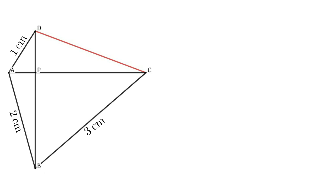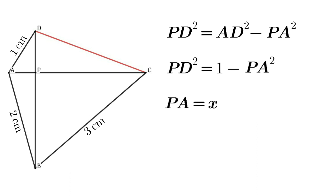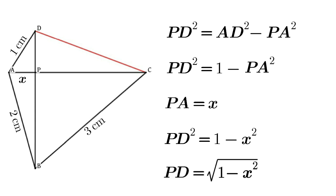Apply Pythagorean theorem in triangle APD. Then we get PD squared equals AD squared minus PA squared. That is, PD squared equals 1 minus PA squared. Let's consider PA equal to x. Then PD squared equals 1 minus x squared, or PD equals root of 1 minus x squared.